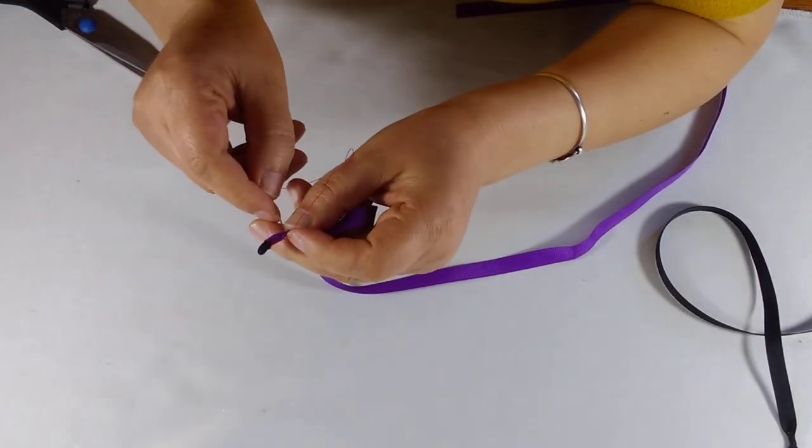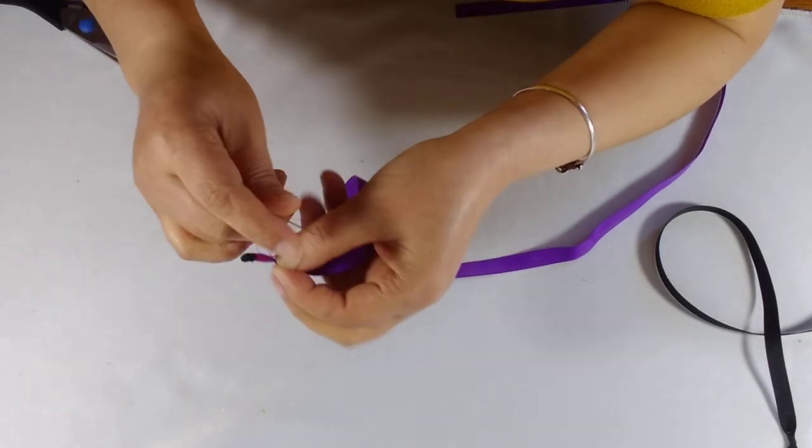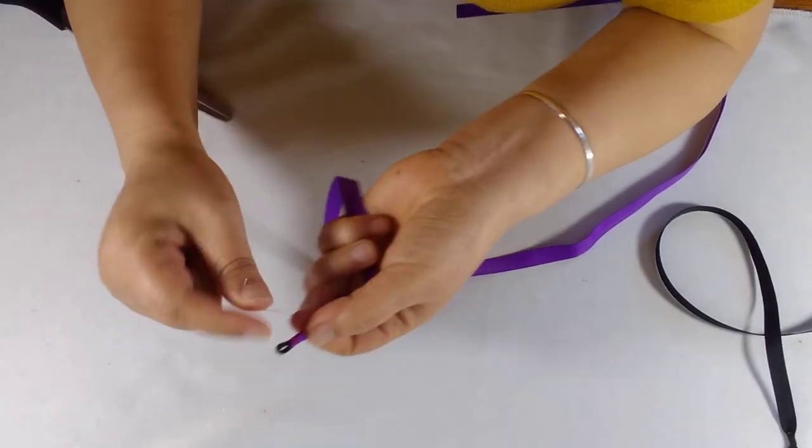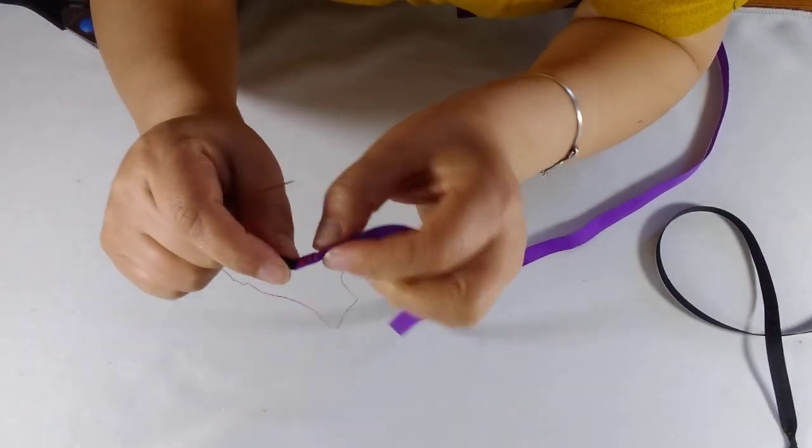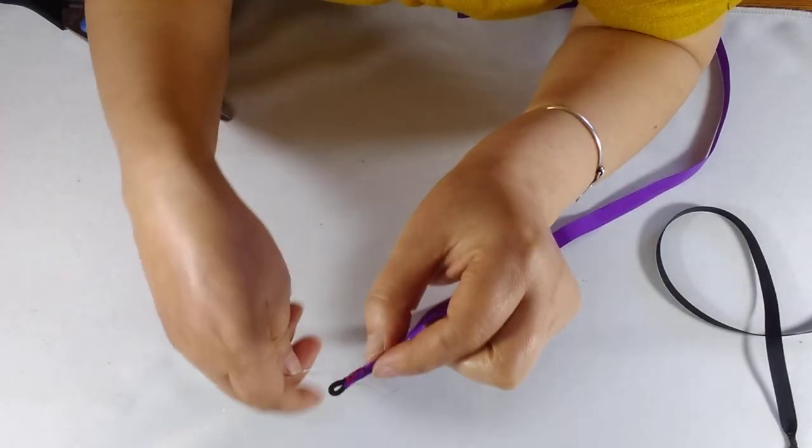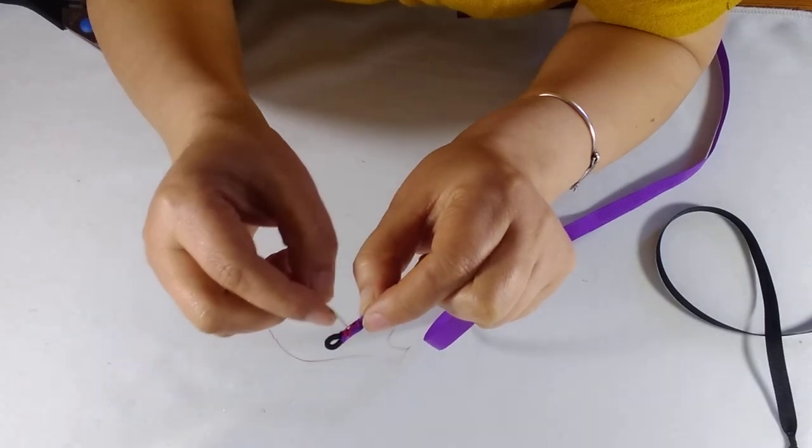When you finish it, make sure the end is secure. Just make a knot or whatever to secure the end. I use a different color just to show you what the finish looks like. You can spend a bit more time to make sure the needlework is neat.